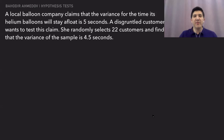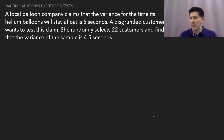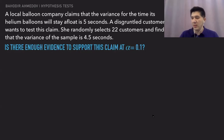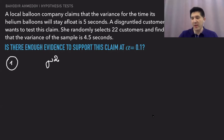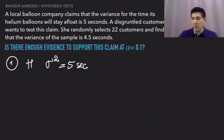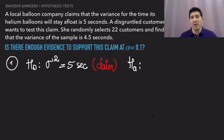A local balloon company claims that the variance for the time its helium balloons will stay aloft is 5 seconds. A customer randomly selects 22 balloons and finds the sample variance is 4.5 seconds. We need to test this claim at the 10% level of significance. The claim states sigma-squared equals 5 seconds — since we see an equality sign, this is the null hypothesis and our claim. The alternative hypothesis is sigma-squared not equal to 5 seconds.